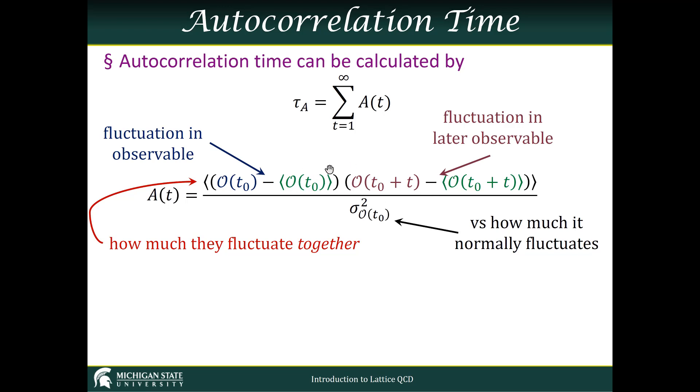So that amount of autocorrelation, we normalize it by how much this quantity normally fluctuates. We know how to calculate that—that's just the variance. And we call this ratio the autocorrelation.